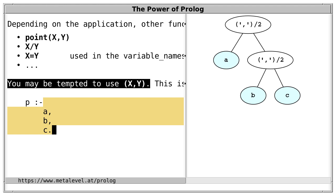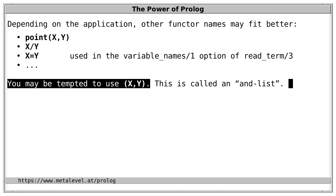In this case, the first argument is the atom A and the second argument is again such an and-list, where the first argument is the atom B and the second argument is the atom C. In a sense, we are used to this representation and so it may be tempting to use it.